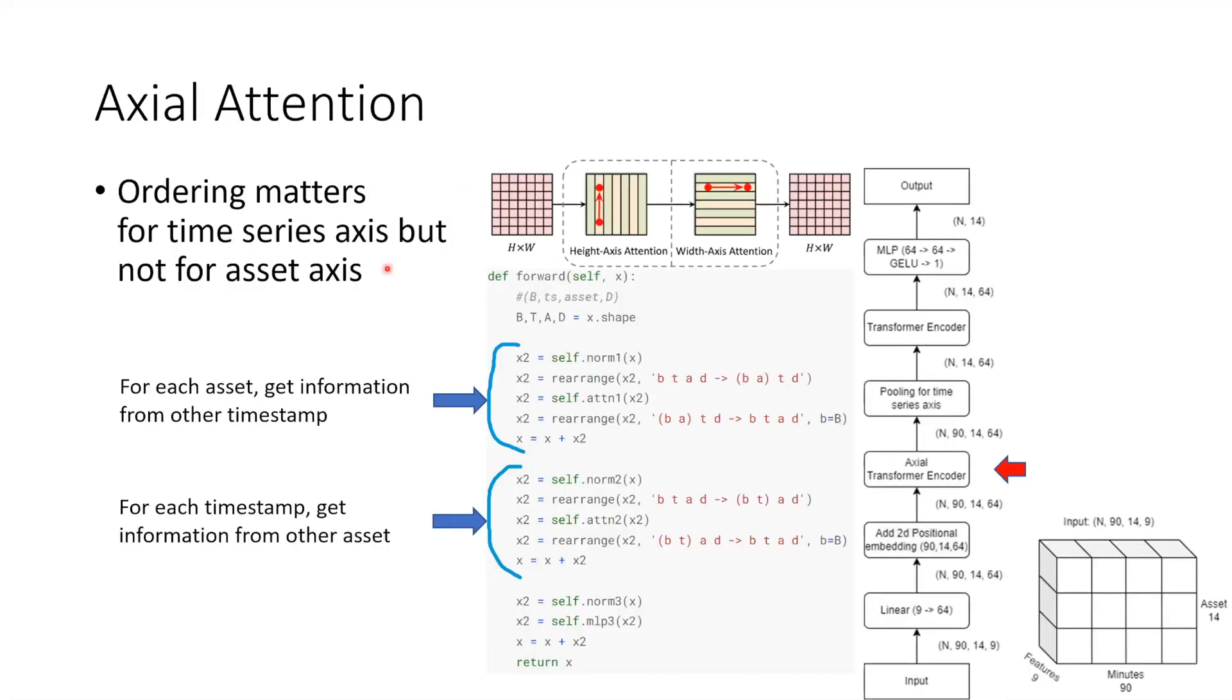Here is the detail of the axial attention layer. It comes from a paper called Axial Attention in Multi-Dimensional Transformers in 2019. In the original paper they use this model for image data but this model can also be used with any data more than two-dimensional. The idea is quite simple. Instead of using one multi-head attention here we use two multi-head attentions.